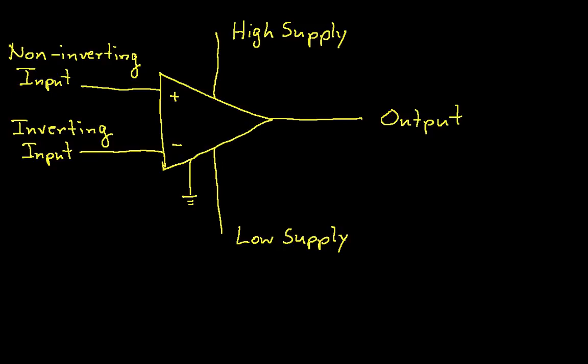It's used typically in feedback configurations to implement all kinds of useful circuits. You can build amplifiers, you can build filters, you can convert currents to voltages, you can buffer between two circuits. It's really a versatile device. It's extremely helpful.